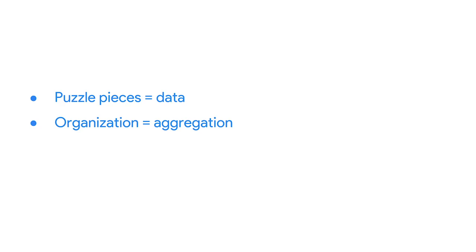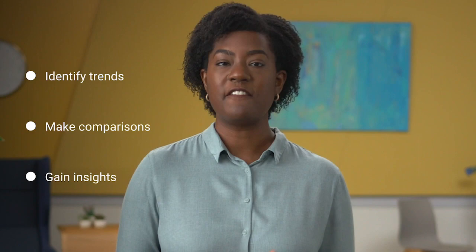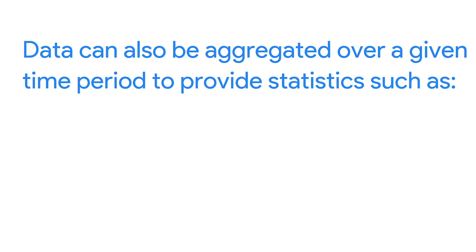Then the piles of pieces that complete a single puzzle become your summary. And putting those pieces back together is like analyzing them to gain important insights. Data aggregation helps data analysts identify trends, make comparisons, and gain insights that wouldn't be possible if each of the data elements were analyzed on its own. For instance, data on high school graduations for individual students can be aggregated into a single graduation rate for an entire class. Data can also be aggregated over a given time period to provide statistics such as averages, minimums, maximums, and sums.